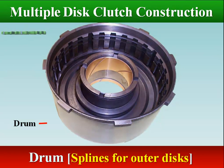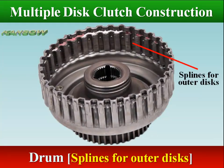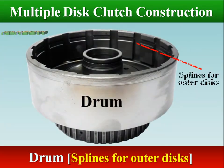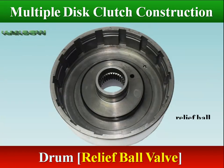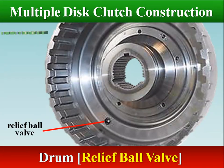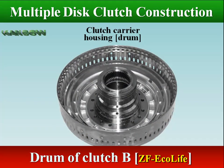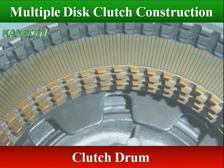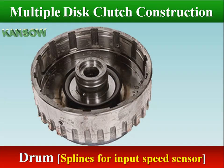The drum, also called clutch housing, has splines inside its outer edge for the externally lugged plates, usually the unlined steel plates. The inner diameter of the drum is machined for the apply piston and its inner and outer seals. A relief ball valve is housed in the drum body to allow hydraulic fluid to escape when the clutch is released. The cylinder bore acts as a guide for piston travel, and the drum holds all other clutch components. The drum also has splines or holes outside its outer edge for a turbine or input speed sensor.